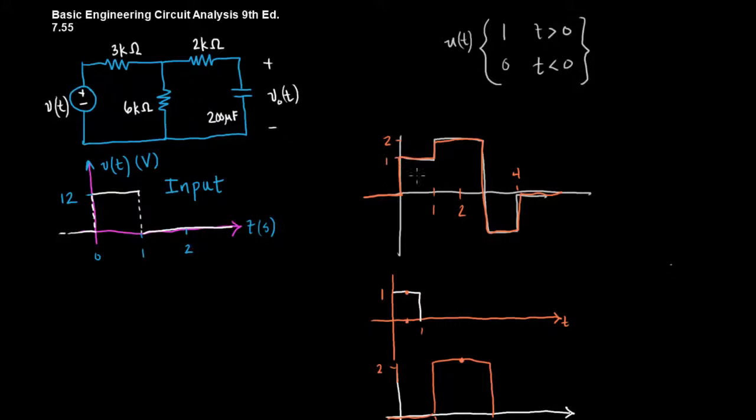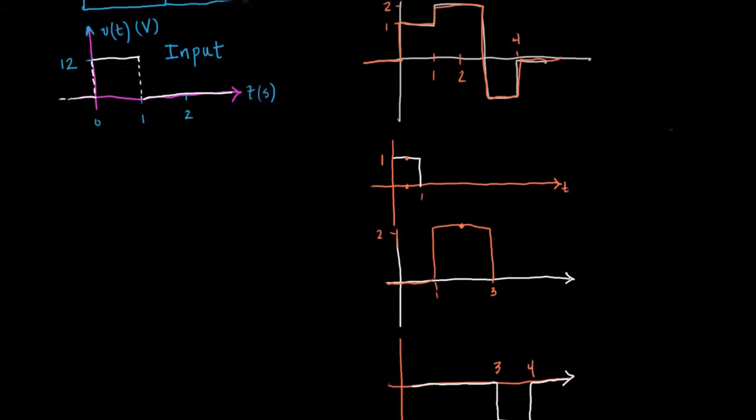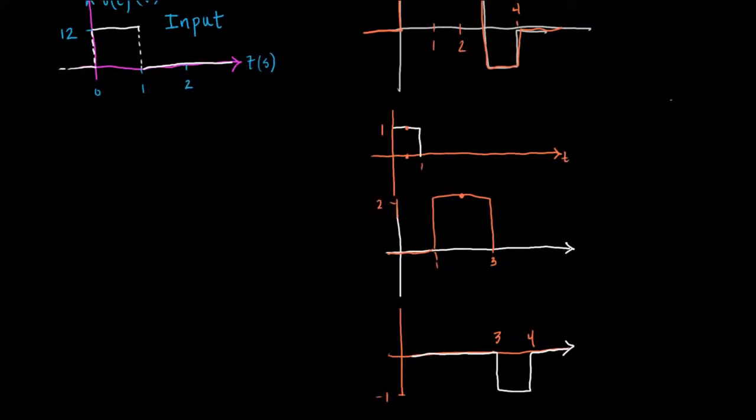So I drew a random unit step function right here and what I want to get across is the concept that we can look at a unit step function as the superposition of several unit step functions. So what I did was took a single unit step function that has multiple steps in it and I broke it down into three different parts.